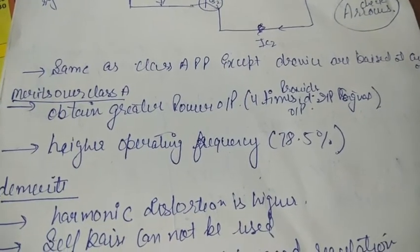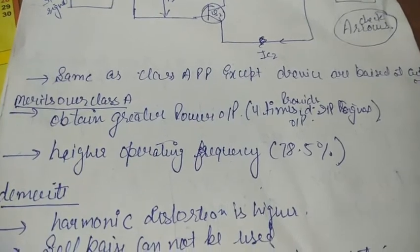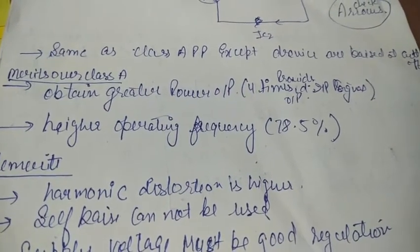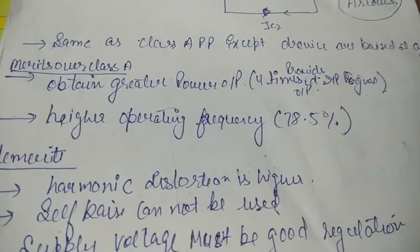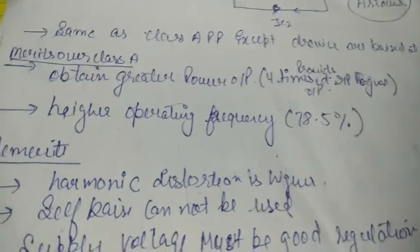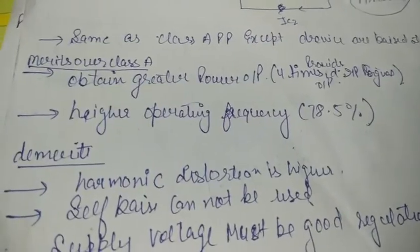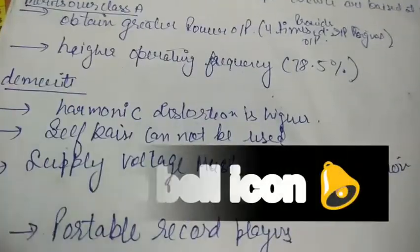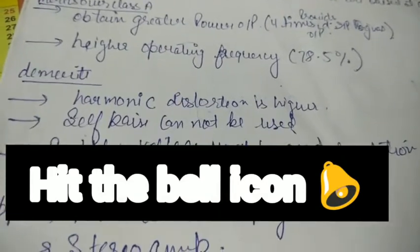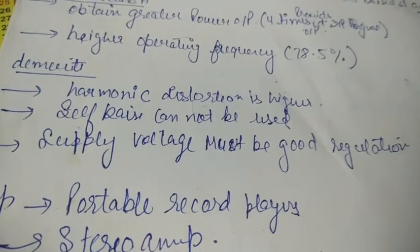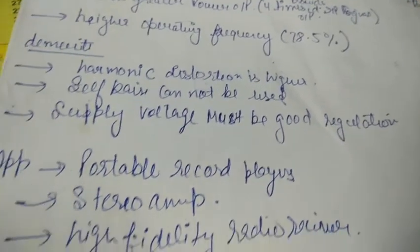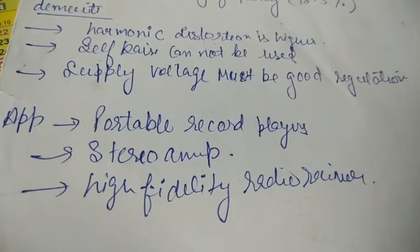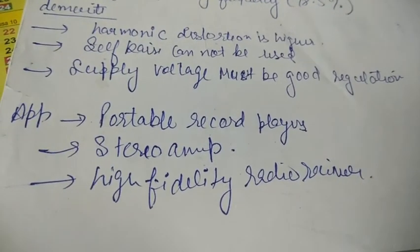This is the Class B amplifier. Class B differs from Class A in that the device operates at the cut-off point — that is the key difference; the other aspects are the same. Now talking about advantages: first, we obtain greater power output — more than 4 times the output. Second is higher operating efficiency, which is 78.5 percent.